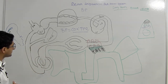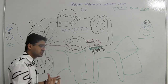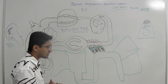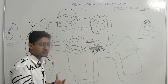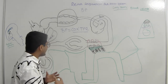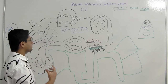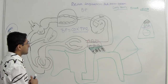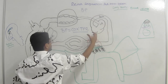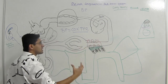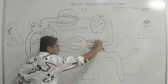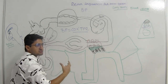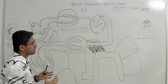Let's say a person has a depletion of blood volume — for example, from a car accident with significant blood loss. We need to increase the blood volume of this person. The kidney plays a very important role here. I'm drawing a diagram showing the left atrium, left ventricle, aorta, and the renal artery going to the kidney, since the kidney is central to this renin pathway.